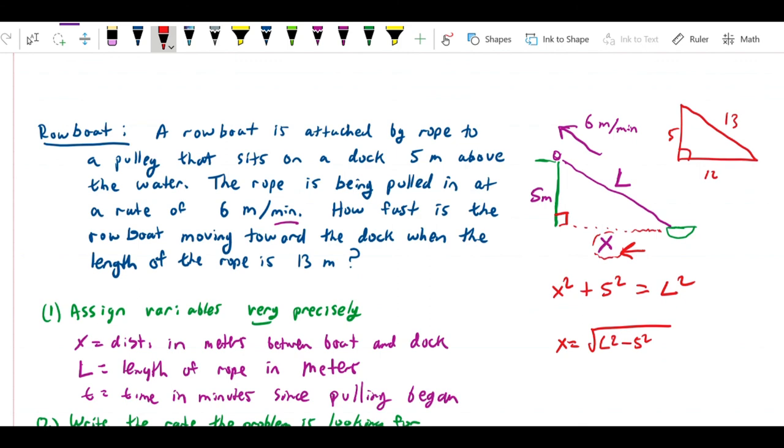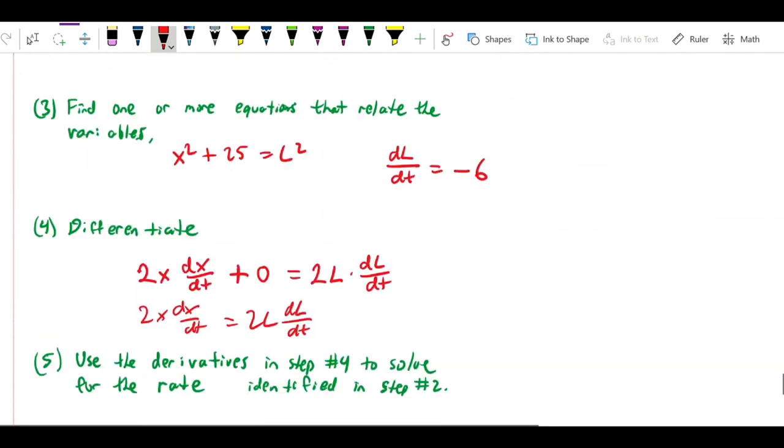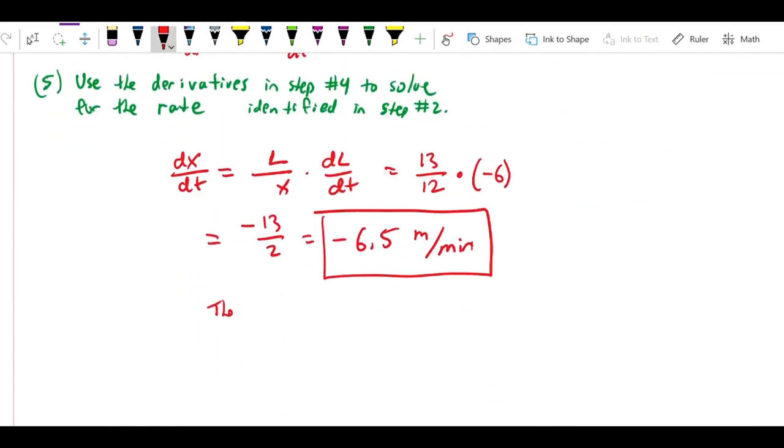I should point out that the question is actually phrased as, how fast is the rowboat moving toward the dock? So, it would be completely correct also to answer this question as saying, the boat is moving toward the dock at 6.5 meters per minute without the negative sign. So, how do I resolve this? You're going to ask, well, wait, do I answer negative or do I answer positive? Well, it depends on how you're answering. It's certainly correct to say that the number dx/dt is a negative number. Then, to answer the exact question in words, since the question is how fast is the boat moving toward the dock, you would answer that as a positive number. So, that's the answer.